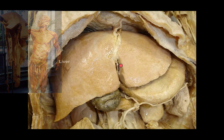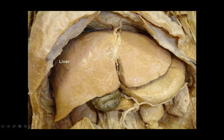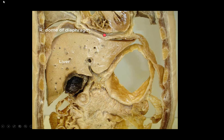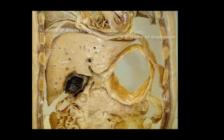The liver is wedge-shaped, as you can see here also in section — it is wedge-shaped. It is located below the diaphragm. This is the right dome of the diaphragm, and here is the left dome. You can see that most of the liver is located on the right side, and because of that, the right dome of the diaphragm is higher than the left dome.